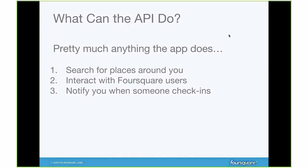So you think, how do I do that? You do it through the Foursquare API. The API does basically anything that our mobile apps can do. This amounts to three things for developers: one, it can search for places around you; two, you can interact with Foursquare users through the API; and three, you can be notified when somebody checks in — we'll send your server a ping and you'll be able to do something with that.